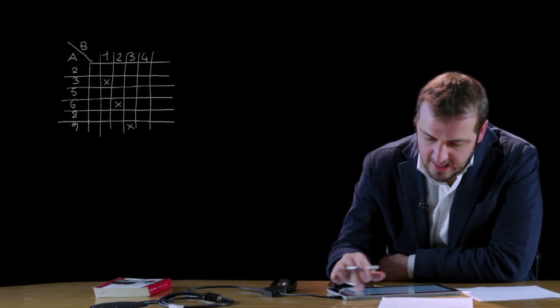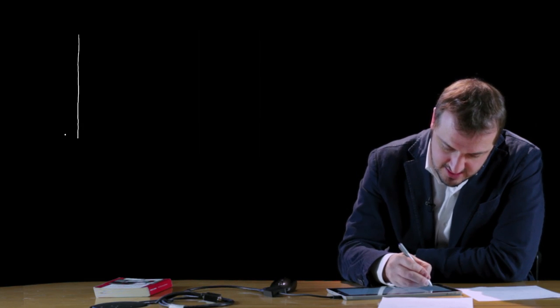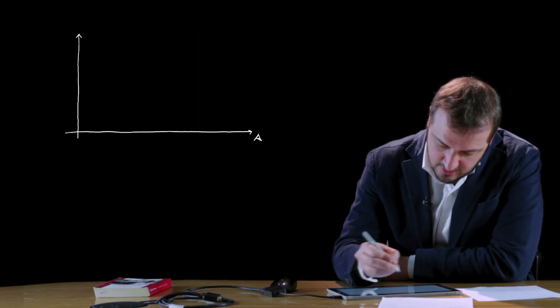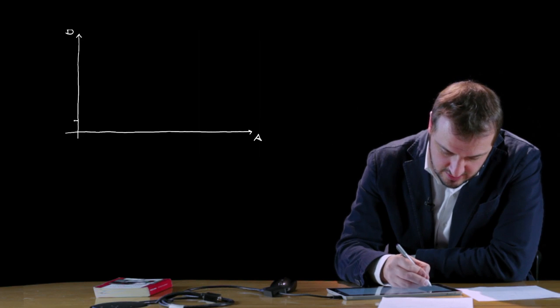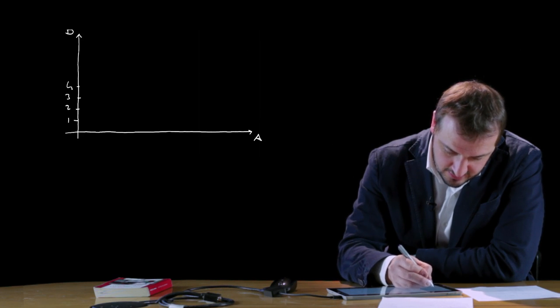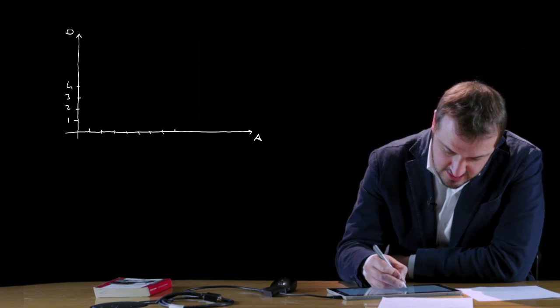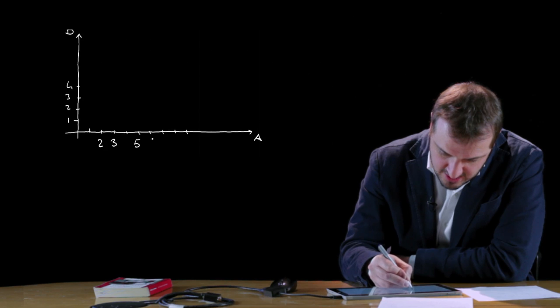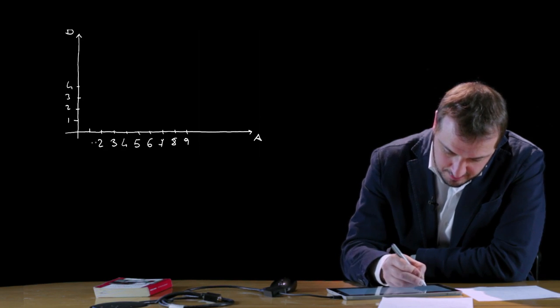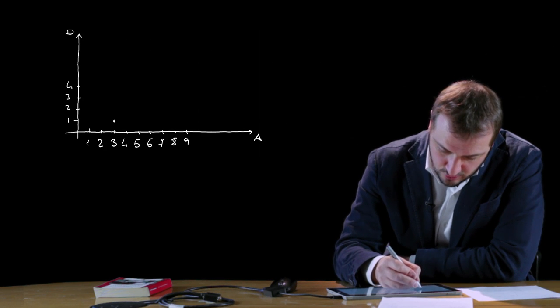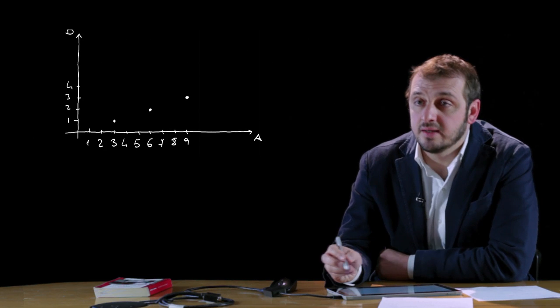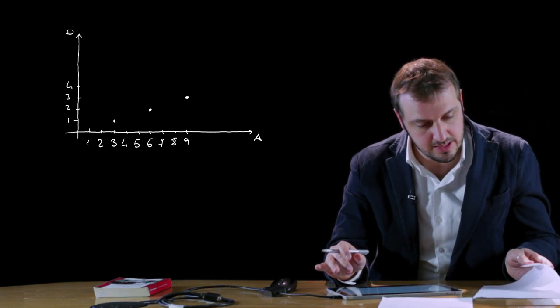Sicuramente la rappresentazione più efficace, ed è anche la più utilizzata in geometria analitica, è quella che inserisce all'interno di un grafico cartesiano le coppie ordinate di punti. Qui rappresentiamo gli elementi di A; sulla retta verticale rappresentiamo invece gli elementi di B: 1, 2, 3 e 4. Gli elementi di A sono 2, 3, 5, 6, 8 e 9. Quelli che ci interessano sono le coppie ordinate: (3,1), (6,2) e (9,3), inserendo nel diagramma cartesiano i punti che rispettano la legge definita.